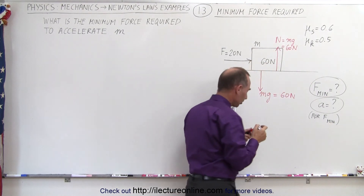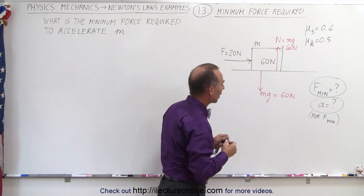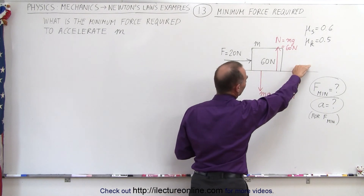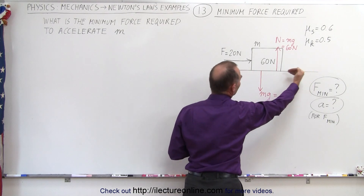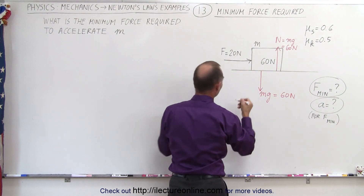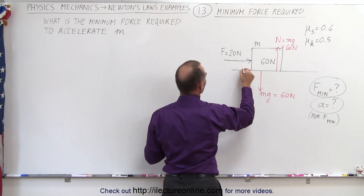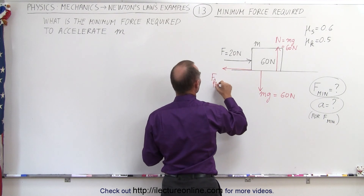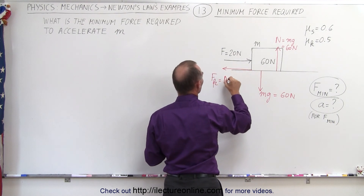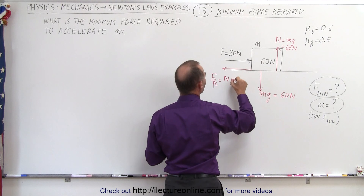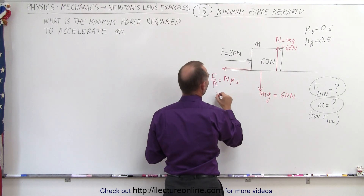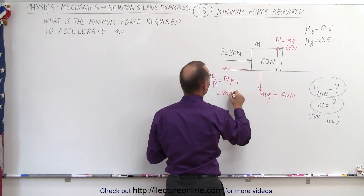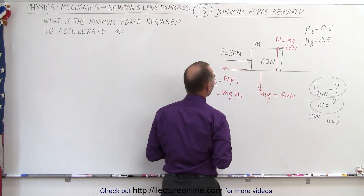And then we have the friction force. Without friction force, the block would accelerate to the right, which means the friction force will act to the left. The friction force is going to be equal to the normal force times the static coefficient of friction, so F_friction = mg × μ_s.